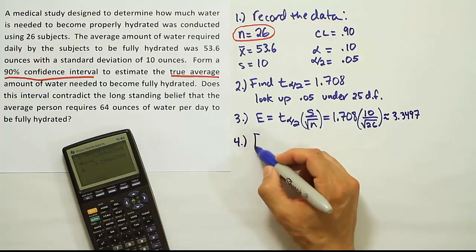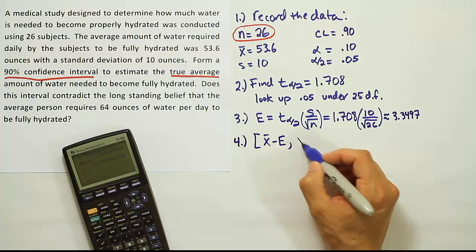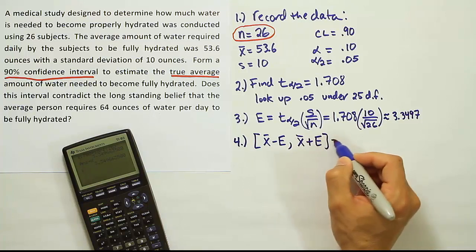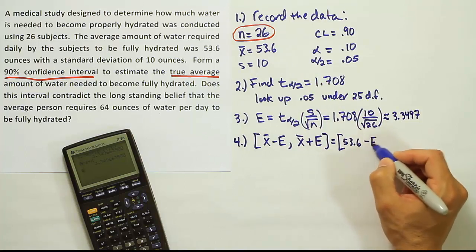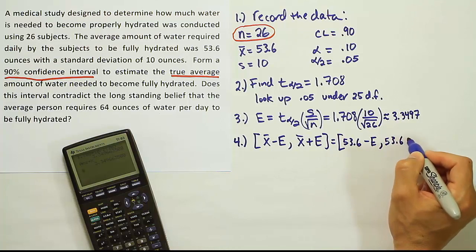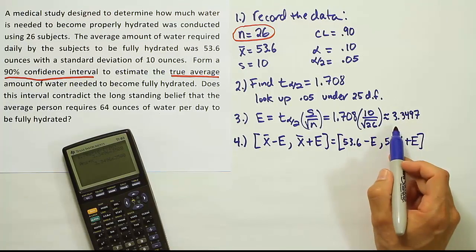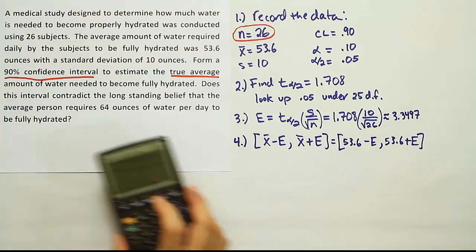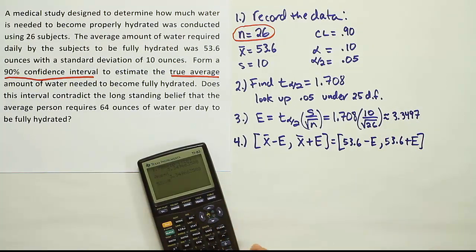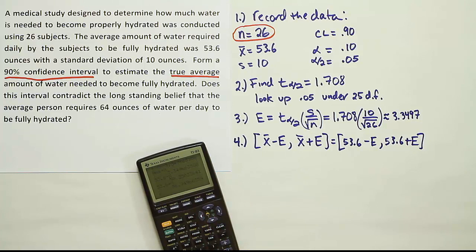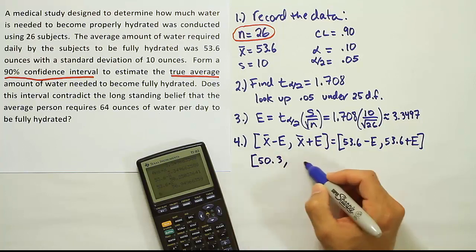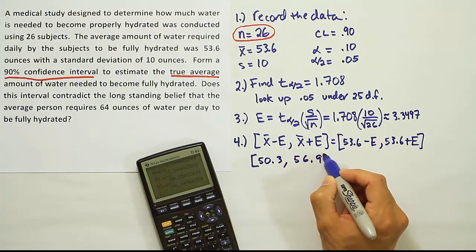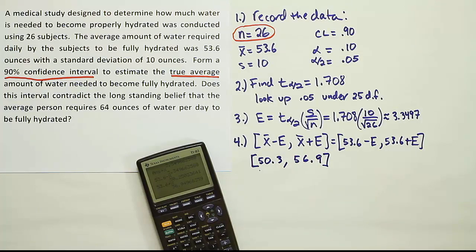I'm going to keep the full amount in my calculator for our next step. The next and final step, the easiest step of forming the interval, is x̄ minus the error, x̄ plus the error. For us, that's going to be our x̄ is 53.6, so it'll be that minus the error, 53.6 plus the error. The error is what we calculated above, so I'm going to do that right now in our calculators, 53.6 minus the error, and then the same 53.6 plus the error. We end up having the interval: 50.3 up to 56.9 ounces.